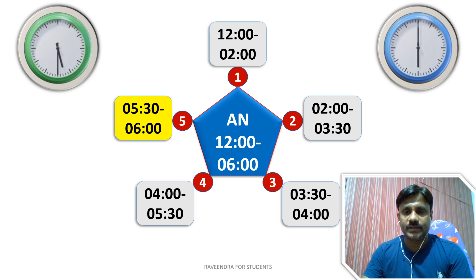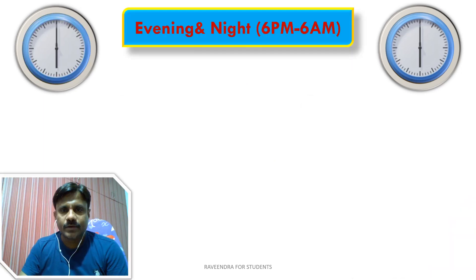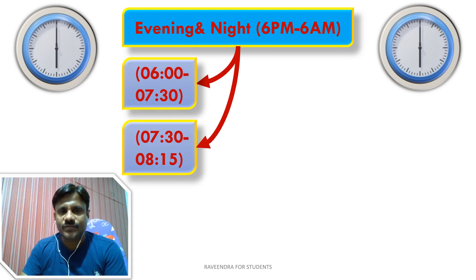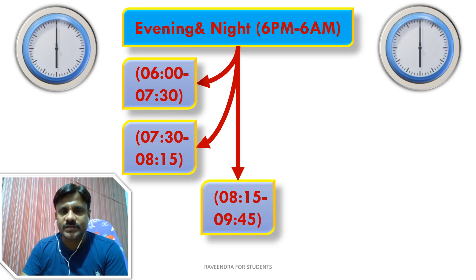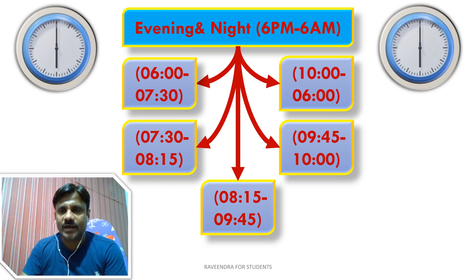The remaining 30 minutes of the afternoon session, 5:30 to 6 p.m., is a fresh-up break — you can take a bath, play a small game like carrom with a friend or sibling, or simply relax. Now the combined evening and night slot, 6 p.m. to 6 a.m., is divided into 5 sub-slots: 6–7:30 p.m., 7:30–8:15 p.m., 8:15–9:45 p.m., 9:45–10 p.m., and 10 p.m.–6 a.m. — an 8-hour slot.